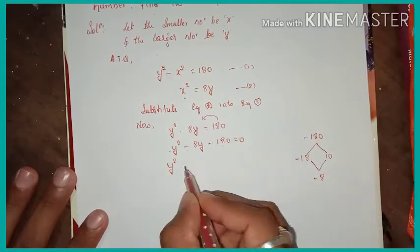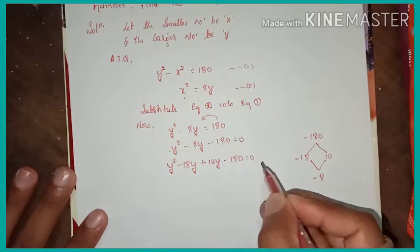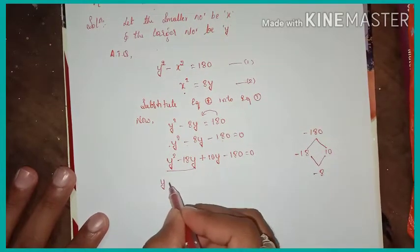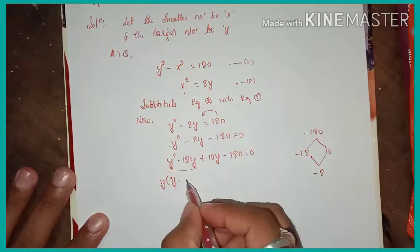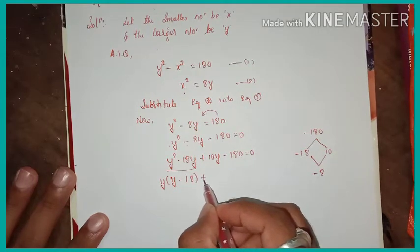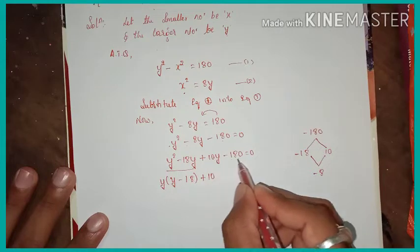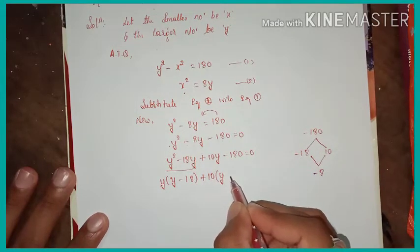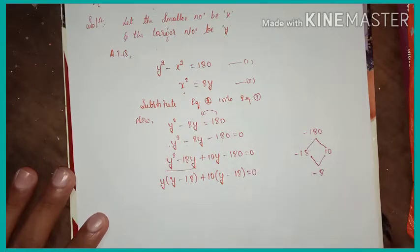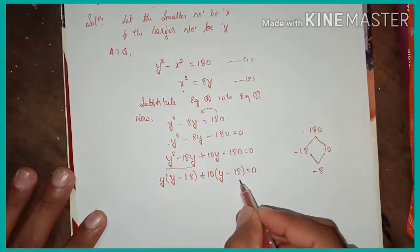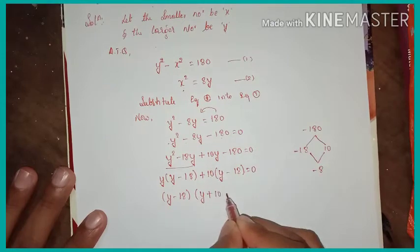The equation becomes y squared minus 18y plus 10y minus 180 equals 0. Taking y as common for the first two terms gives y(y minus 18). Taking 10 as common for the next two terms gives 10(y minus 18) equals 0. Since (y minus 18) is common for both, we get (y minus 18)(y plus 10) equals 0.